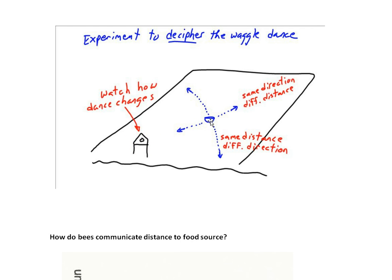And then what you do is you change the location of the food in a systematic way. So maybe you'll move the food over to this location, same distance, but it's now in a different direction from the hive. And then as you move the food and you let bees visit and go back and dance, what you want to do is then compare what part of the dance has changed.